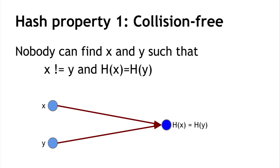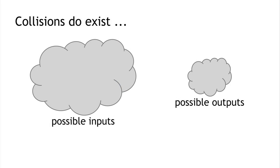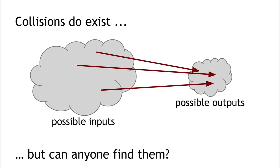Collisions do exist. Over here on the left, I'm depicting all possible inputs to this function, which can be a string of any size. Over here are all possible outputs, which must be 256 bits — only 2^256 possibilities. Since there are more possible inputs than outputs, as you map all the points on the left into the right, it has to get crowded. In fact, there have to be multiple input values that map to the same output. So collisions do exist — the question is whether any collisions are findable by regular people using regular computers.